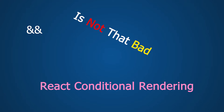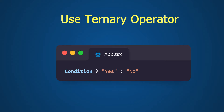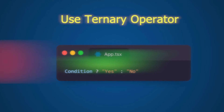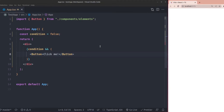JavaScript's logical AND operator is not as bad as they say for React conditional rendering. Hello and welcome to the Sakura Dev channel. We've all seen videos saying don't use the logical AND operator in React conditional rendering and instead use the ternary operator. They are right about it, but I'm going to show you a simple trick that can fix the bad behavior of the logical AND operator. I'm not going to just offer the ternary operator.